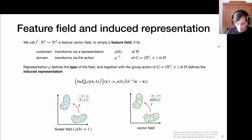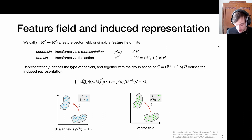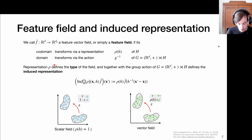We should think of this vector field as more general than just assigning 2D vectors to each location, which are transformed via 2D rotation matrices. These vectors could represent any quantity — any vector that transforms under a representation of the group H. So the vector field is defined via the representation of H, and therefore we call row the type of the field.